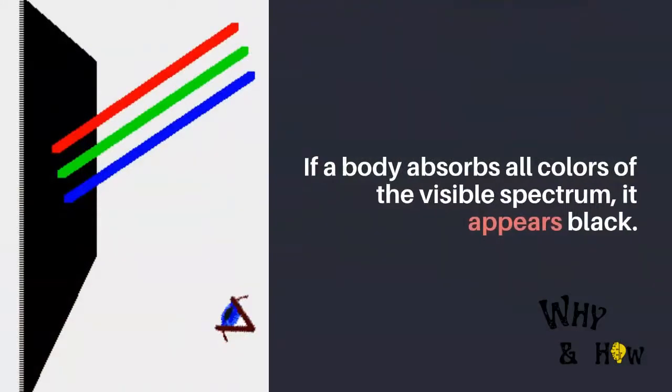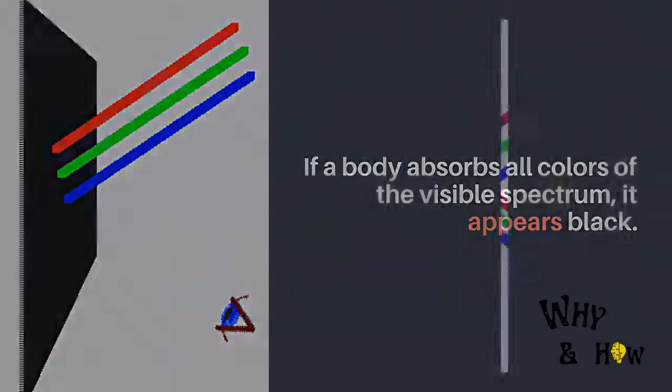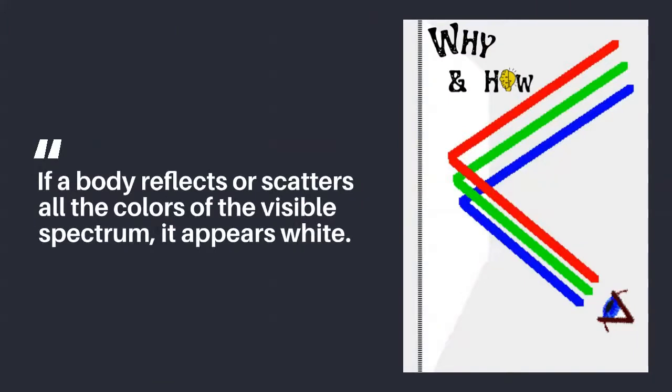If a body absorbs all colors of the visible spectrum, it appears black. If a body reflects or scatters all the colors of the visible spectrum, it appears white.